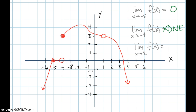What about at positive 1? As X approaches positive 1 from the left side, the Y values are approaching positive 3. There's a hole there — a discontinuity, a break in the function; there is no f of 1. But as X approaches 1 from the left, Y approaches 3, and as X approaches 1 from the right, Y is also approaching 3. So even though there is no f of 1, the limit as X approaches 1 still exists — it's 3.